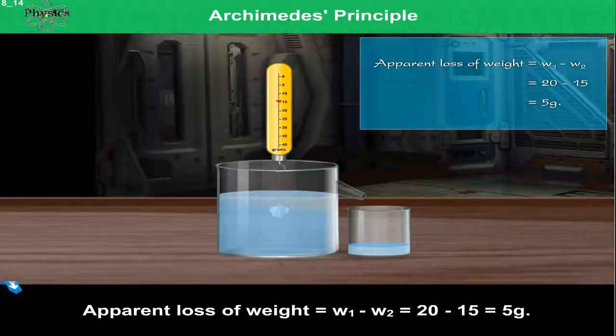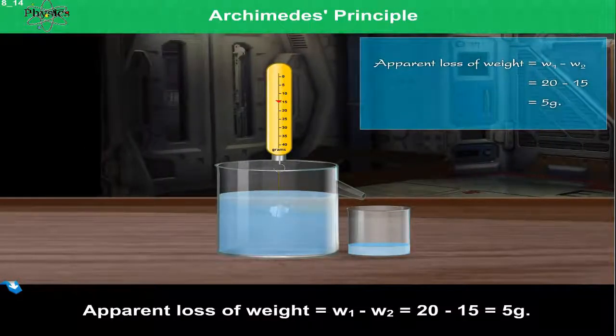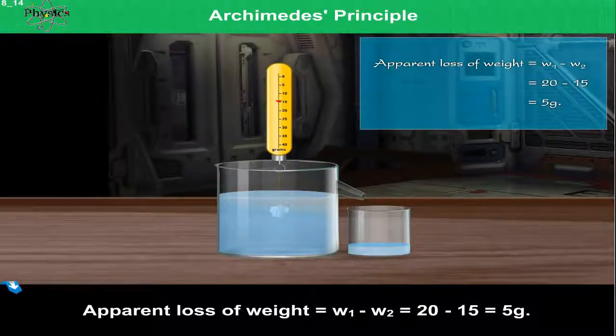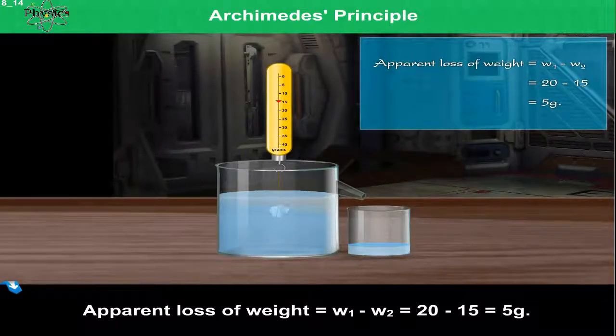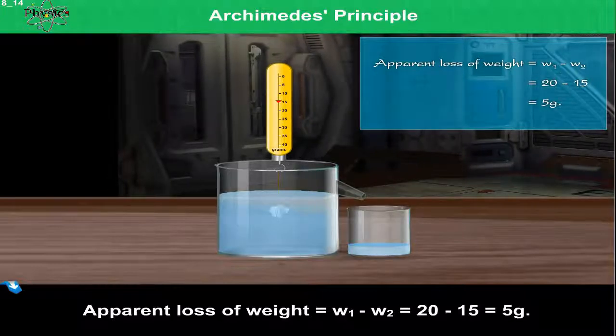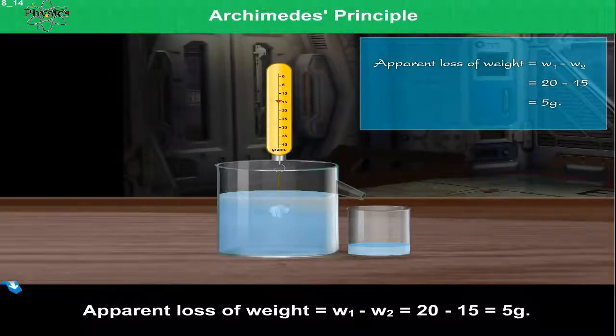Apparent loss of weight is equal to W1 minus W2, which equals 20 minus 15, which equals 5 grams.